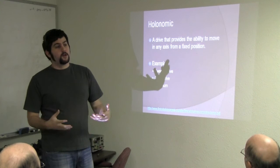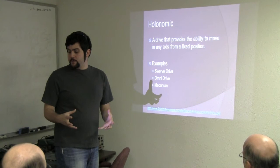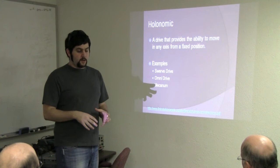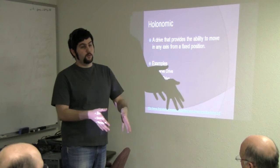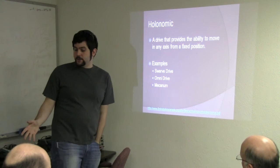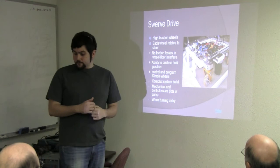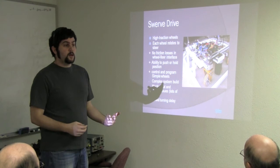The next major subtopic of types of drives is holonomic, and this is actually the domain that I've been playing in recently. It's any drive that provides the ability to move in any axis from a fixed position. So if your robot is stationary and you want to go that way, you just go that way, or your robot doesn't have to change orientation to maneuver in any direction. The three different ways that most are accomplished: a swerve drive, an omni drive, and a mecanum drive.